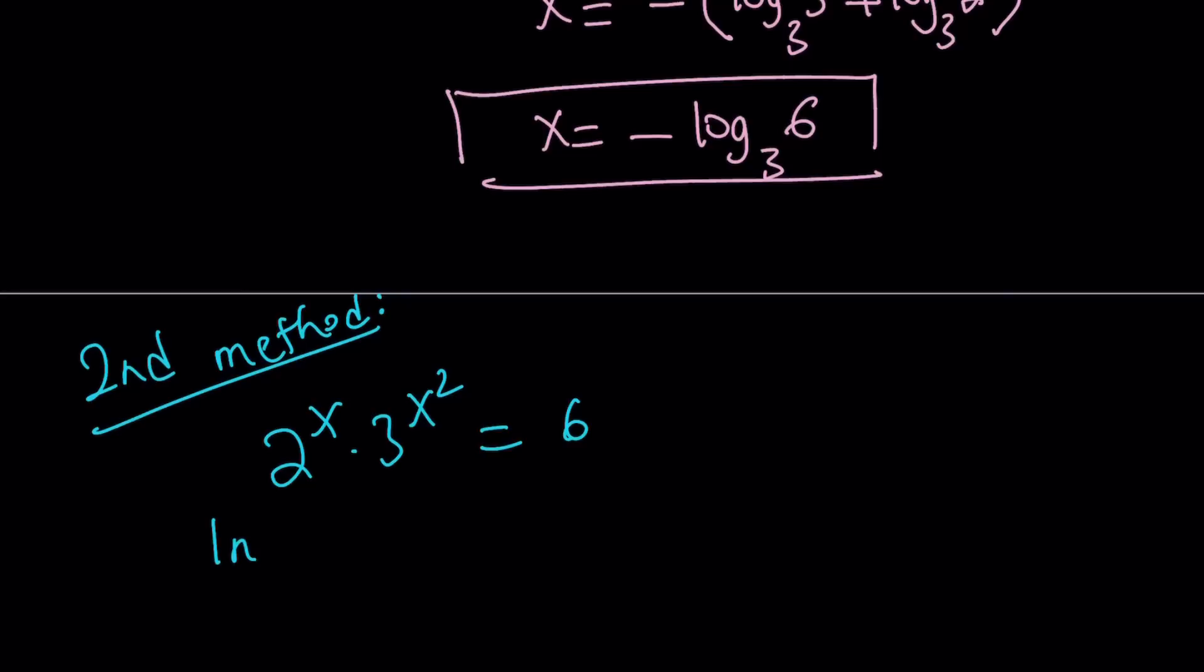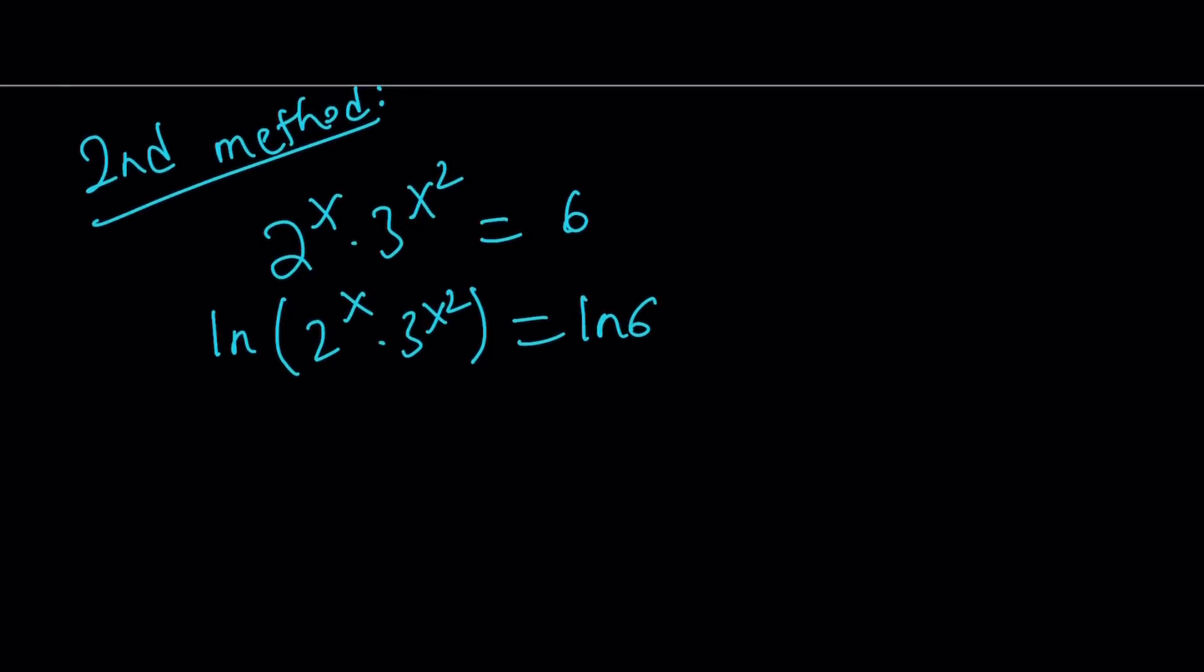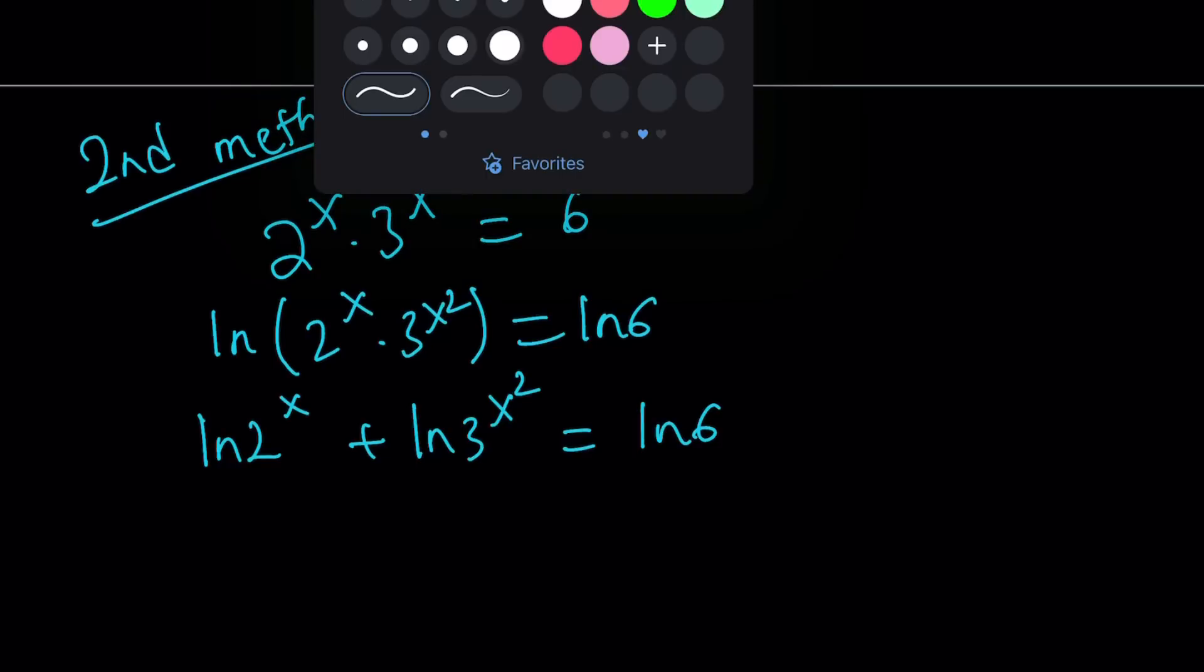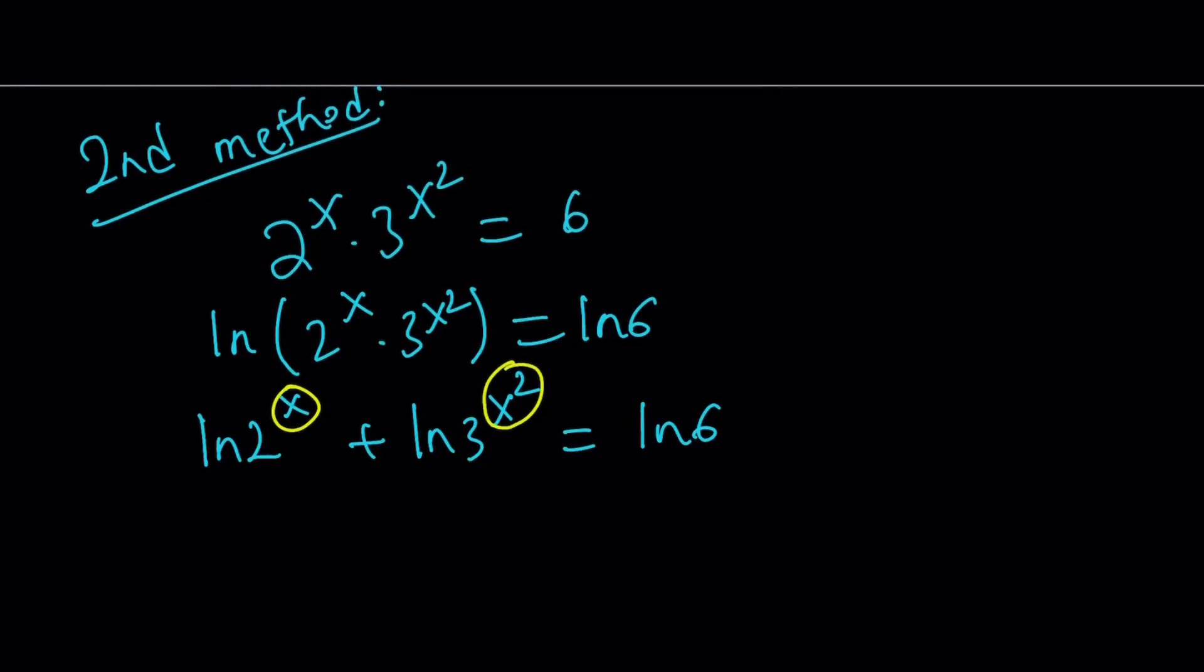If I ln this product, that's going to give me the sum of two lns by log properties. We're going to move the powers like before. But we've got to be careful. What is the power here? The power is x squared and x. Those are the powers. We're going to move them to the front. So it gives us x ln 2 plus x² ln 3 equals ln 6.